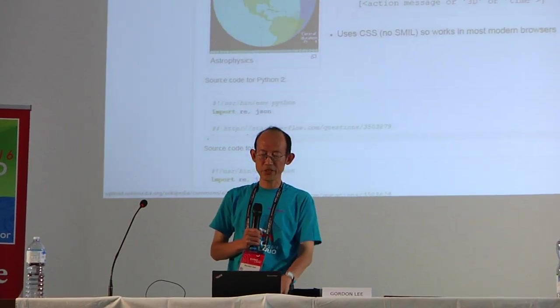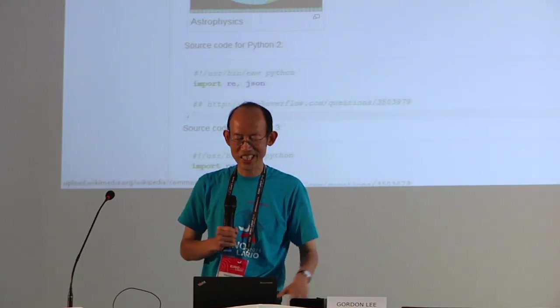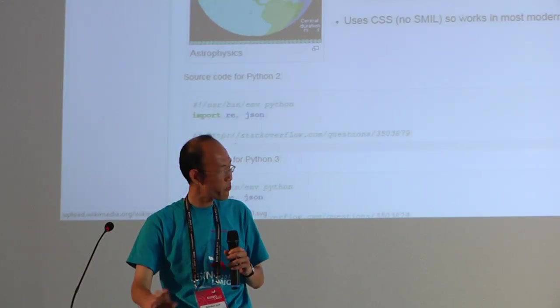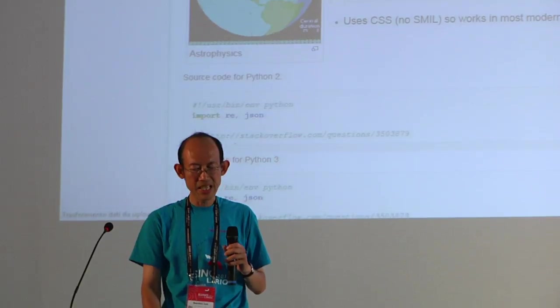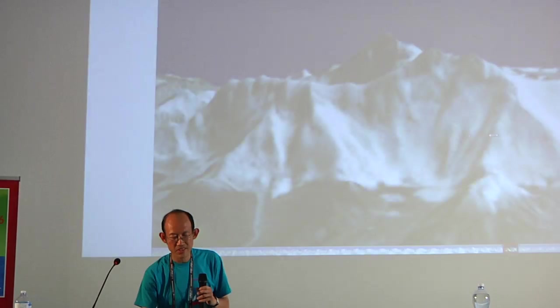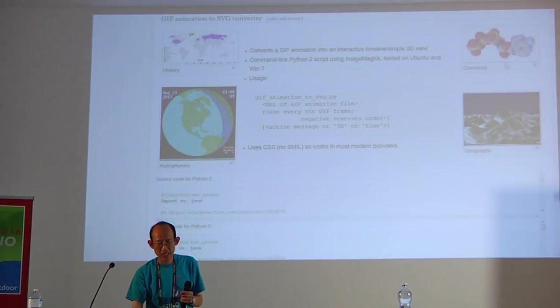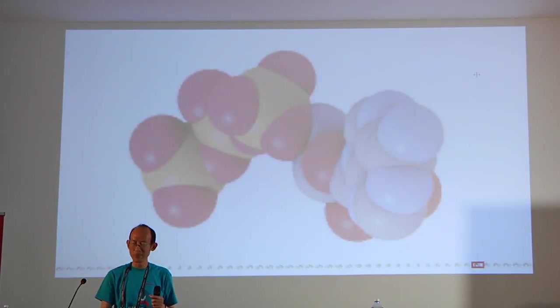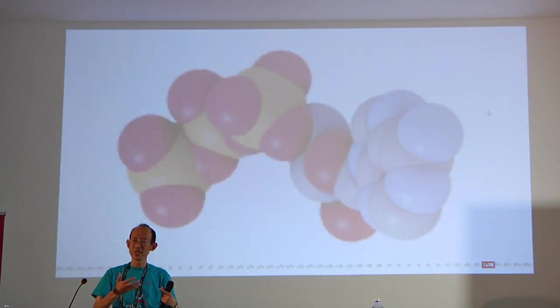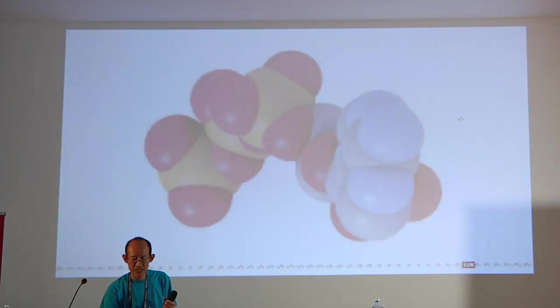I'll briefly talk about this Python script I wrote. I wrote it in Python 2, and I tried last night to run it in Python 3 — full of bugs. As I showed earlier, this model truck — I could use it for geography, like a 3D render of Mount Everest where I can rotate and see the mountain from different angles. I can also use it in chemistry — I can rotate a molecule model, which is much more useful than a static image where the shape isn't obvious.